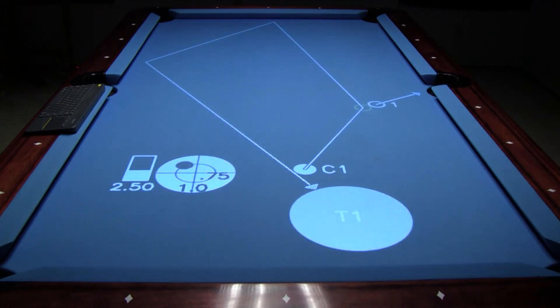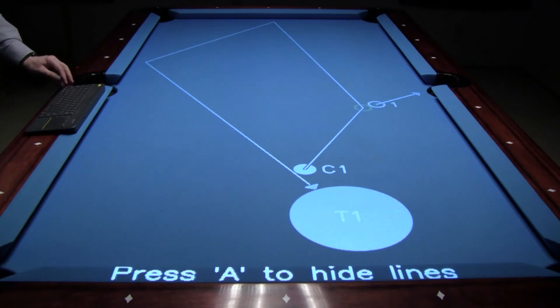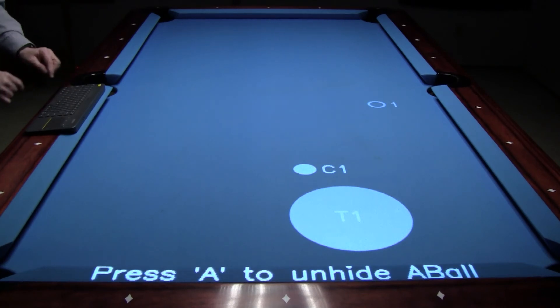When a layout has a target some players enjoy the challenge of trying to figure out how to get to the target without track lines or cueing suggestions on the aiming ball. By pressing shift plus A once, just the aiming ball will be removed. If shift plus A is pressed again, track lines will be removed also. Pressing shift A a third time will bring back the full display.